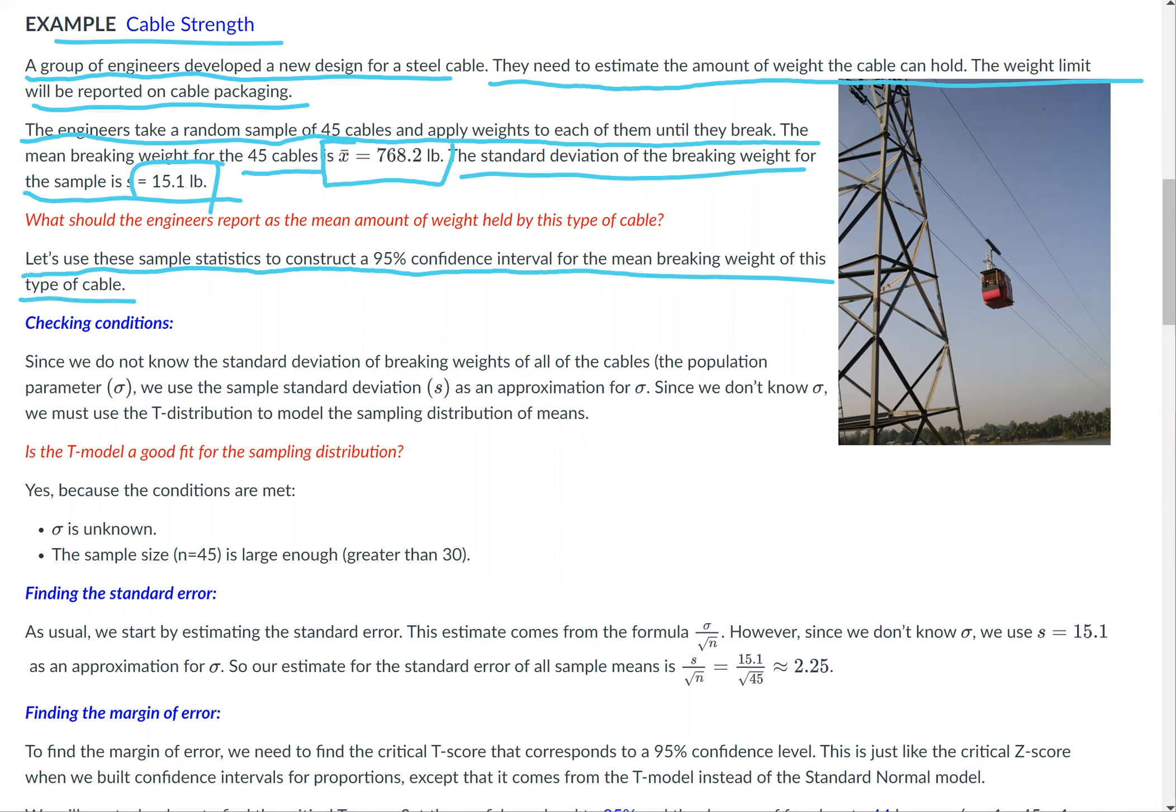We'll check conditions. Since we do not know the standard deviation of breaking weights of all the cables, the population parameter σ, we use the sample standard deviation s as the approximation for σ. In this case, it's the standard deviation of the sample of 45 cables, so we must use the t-distribution model because we don't know σ.